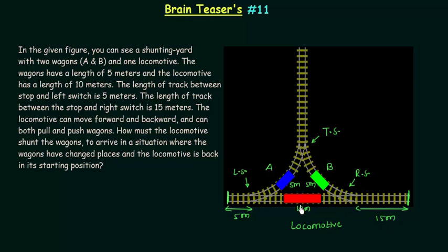The locomotive can move forward and backward and can both pull and push wagons. How must the locomotive shunt the wagons to arrive in a situation where the wagons have changed places and the locomotive is back in its starting position?